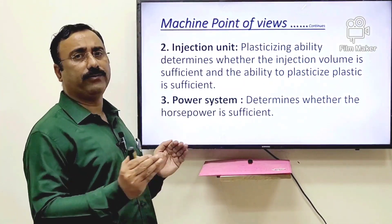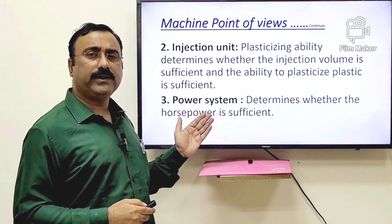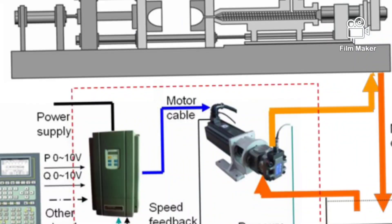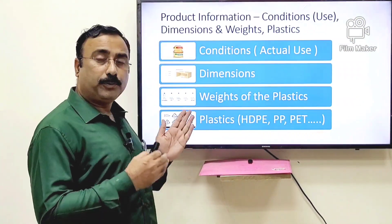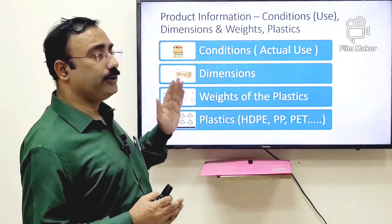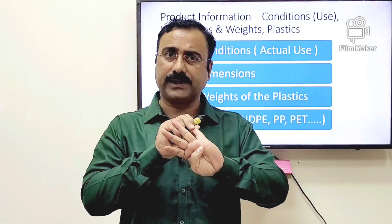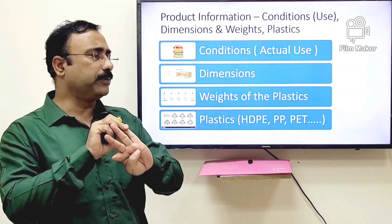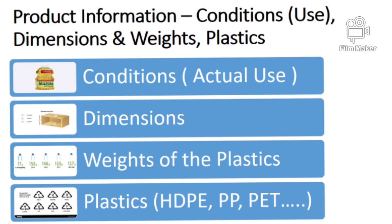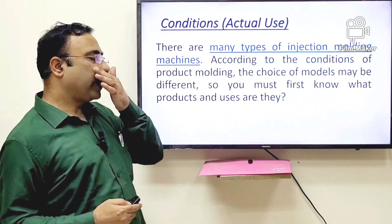The third machine consideration is the power system — how much horsepower is required or being consumed during production. On the product side, there are at least four important pieces of information to consider: the first is condition, the second is dimension, the third is the weight of the plastic part, and the fourth is which plastic material you are going to use.